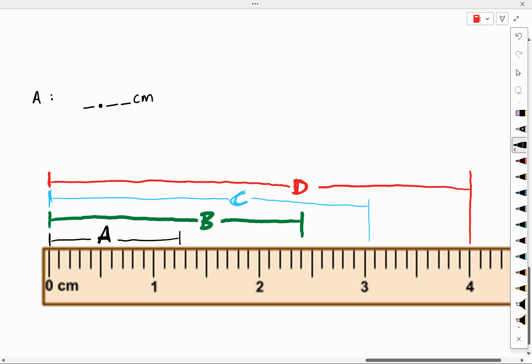All right. Repeat that for object B and object C and object D. Record the lengths of each of those objects. Hopefully this helps you as you're making measurements using analog scales.